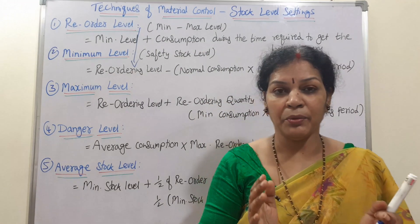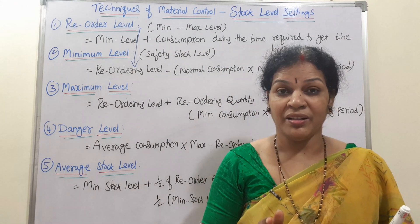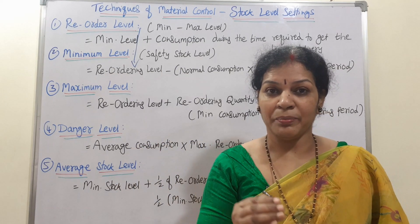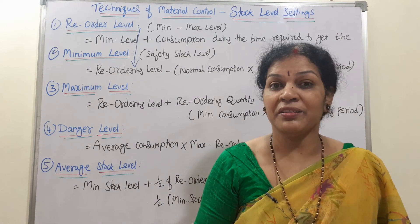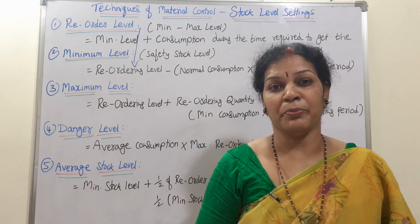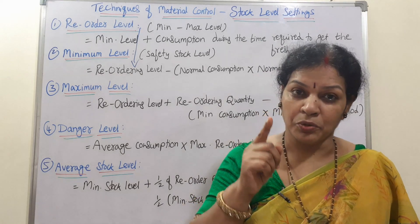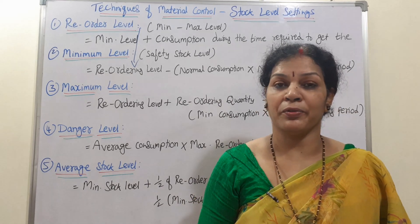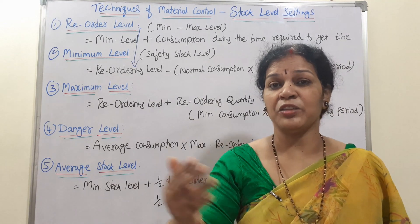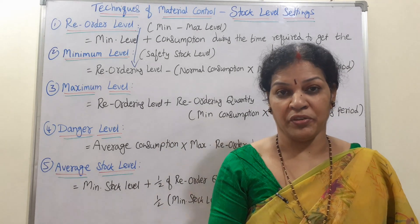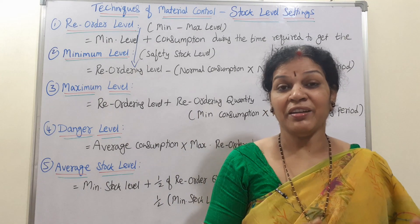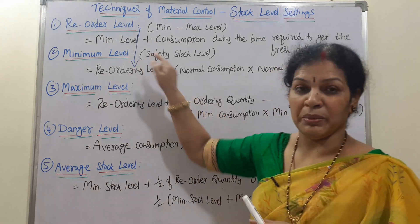Every manufacturing company has to keep that minimum level. Because if the manufacturing process requires material and we don't maintain this minimum level, there is a chance of stoppage of production. That is why every stores manager has to be very careful. If stock is decreasing, he has to inform the purchase officer to buy the material — that is the minimum responsibility of every stores officer.